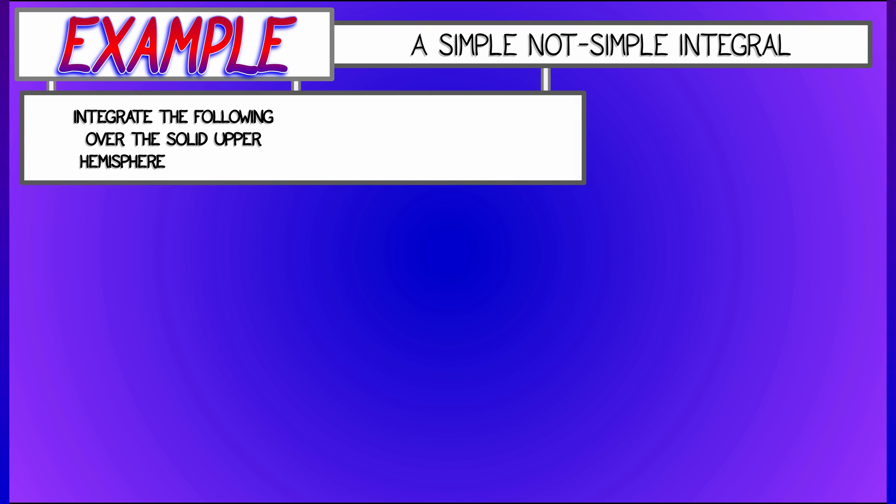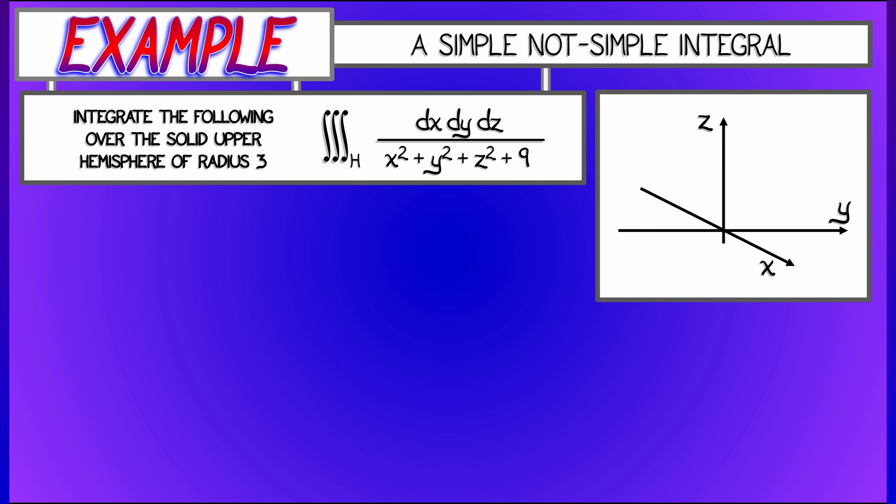Let's say we want to integrate a function over a solid upper hemisphere, radius 3, but this function is 1 over x squared plus y squared plus z squared plus 9. That's not going to be so easy to do in Cartesian coordinates, but this geometry is perfect for spherical coordinates, and I see a rho squared hiding in that integrand.